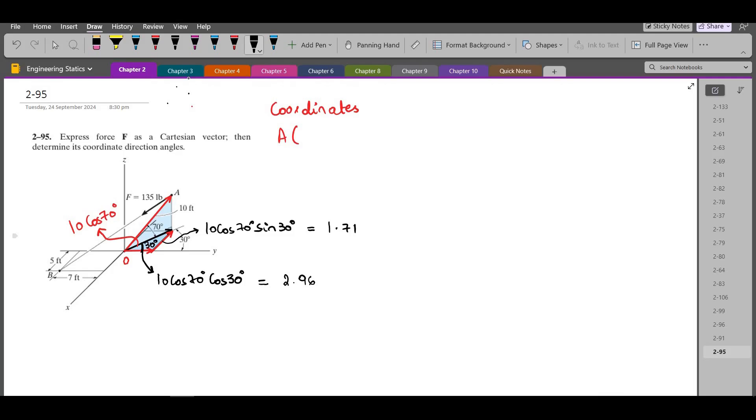Also, we have a component along the z-axis and it would look something like this: 10 sin 70. And this right here is 10 sin 70, and it can be simplified to 9.4. So the coordinates of point A are negative 1.71 comma 2.96 comma 9.4 feet.